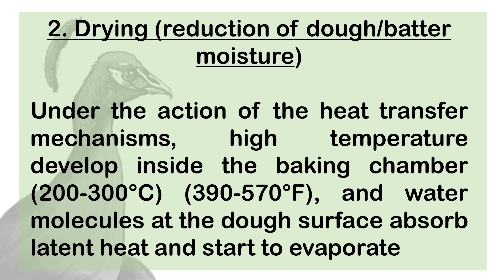Number 2: Drying — reduction of dough or batter moisture. Under the action of the heat transfer mechanisms, high temperatures develop inside the baking chamber from 200 to 300 degrees centigrade or 390 to 570 degrees Fahrenheit, and water molecules at the dough surface absorb latent heat and start to evaporate.